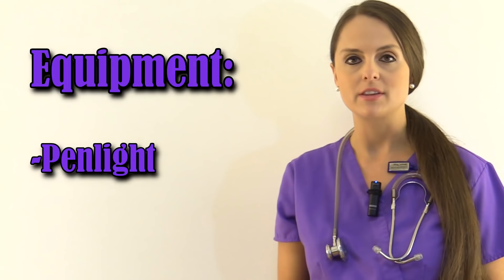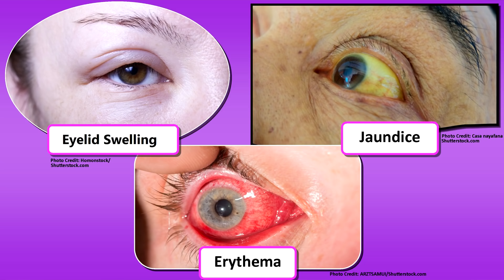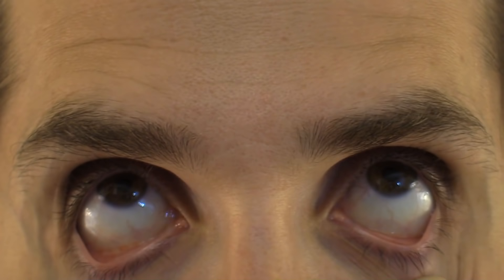We're going to inspect the eyes first, and we're looking at several things: the eyelid, the sclera which is the white of the eyes, the iris, the pupil, and the conjunctiva. You shouldn't see any swelling of the eyelids. The sclera should be white and shiny — it shouldn't be yellow like in jaundice. When you pull down the lower lid and have the patient look up, the conjunctiva should be nice and pink. It shouldn't be red, and you shouldn't see any drainage.